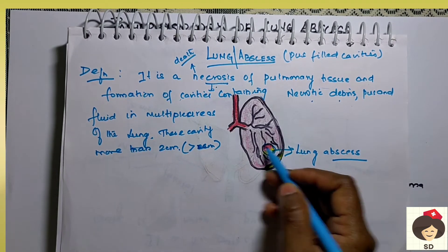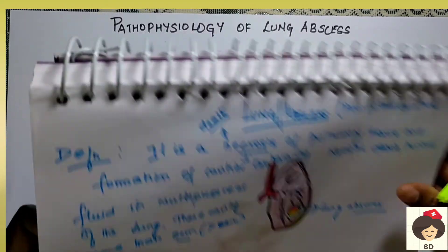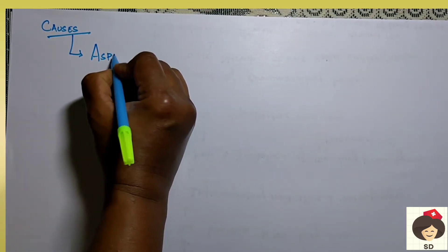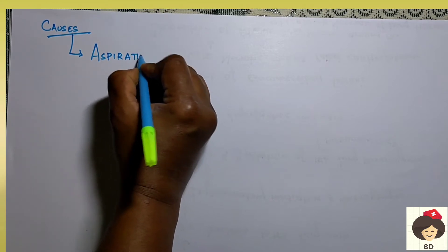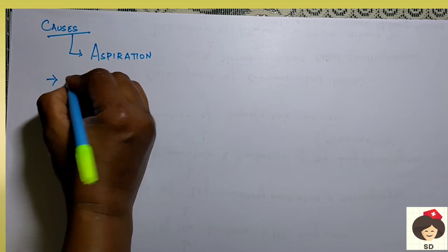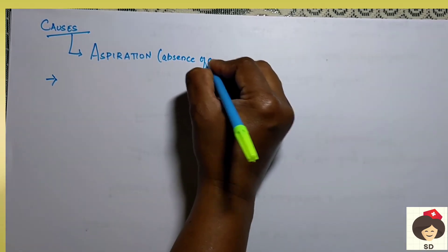When these pockets are measured and found to be more than 2 cm in size, it is called lung abscess. Next, coming to the causes of lung abscess. Lung abscess can mainly be caused due to aspiration. Aspiration can occur because of the absence of the gag reflex — that is the swallowing reflex.